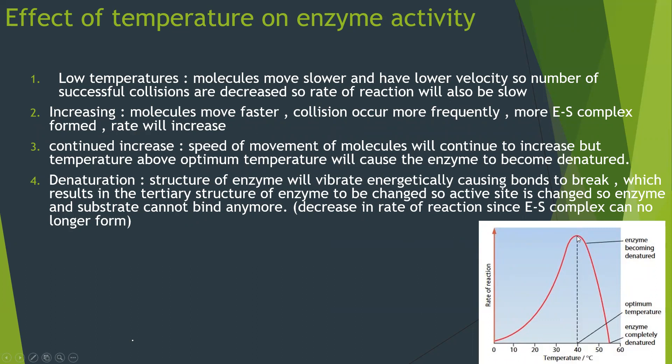Beyond the optimum temperature, the enzyme becomes denatured. The enzyme structure vibrates so energetically that bonds break, changing the tertiary structure completely and altering the active site. Once the active site is altered, enzyme and substrate cannot bind, so no enzyme-substrate complex forms and the rate of reaction decreases. Eventually all enzymes are completely denatured. Unlike the pH graph, the temperature graph is one-sided: a slow increase then a fast decrease.